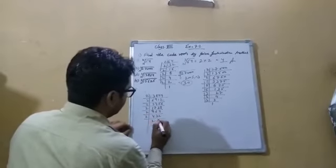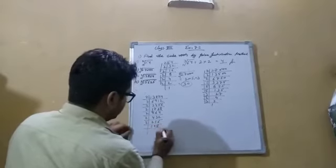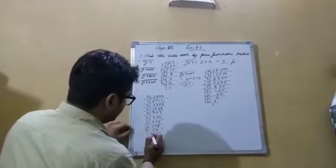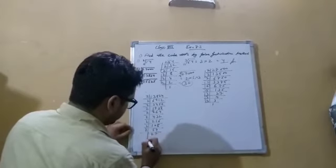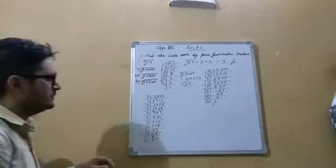Continuing the division process, then 3 into 27 is 9, 3 into 9 is 3, 3 into 3 is 1. So student, for this number we have completed the factorization.